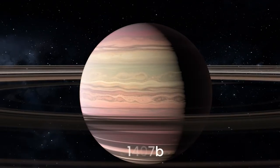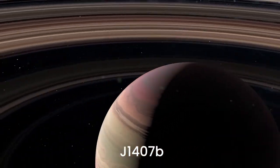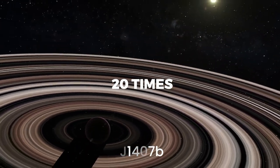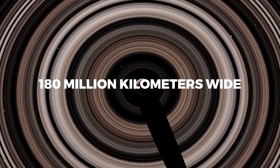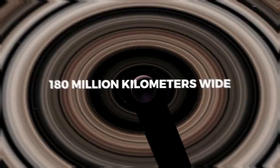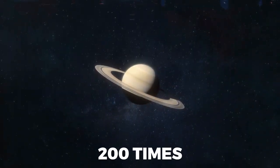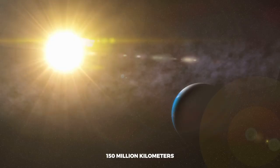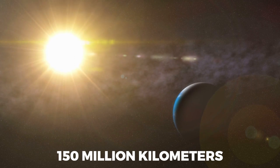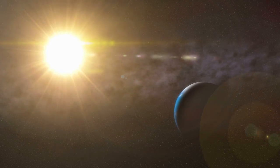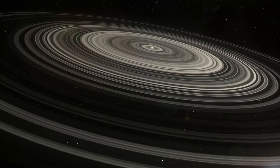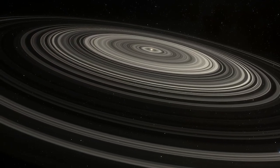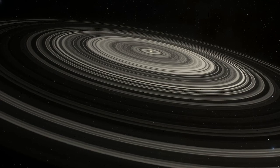The exoplanet J1407b is 20 times as massive as Saturn. This super Saturn has rings that are 180 million kilometers wide. That is 200 times greater than Saturn's rings and 150 million kilometers larger than the distance between the Earth and the Sun. There is no doubt that J1407b is the authentic Lord of the Rings.